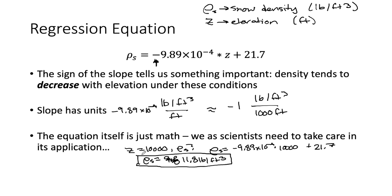On the other hand, we could take this equation and apply it completely inappropriately. So we could ask ourselves, what about at an elevation of zero at sea level? What is the snow density? Well, if we go up and plug that in, zero times minus 9.89 times 10 to the minus fourth is zero. Add the 21.7, so we would get a rho S value of 21.7 pounds per cubic feet.